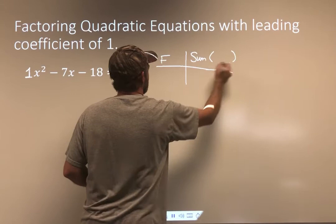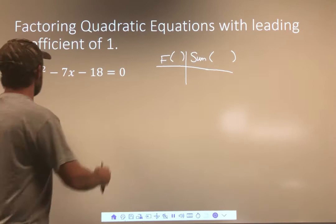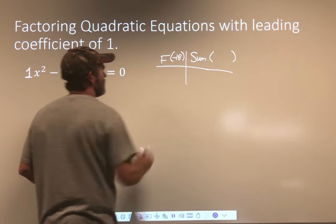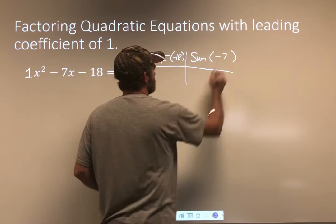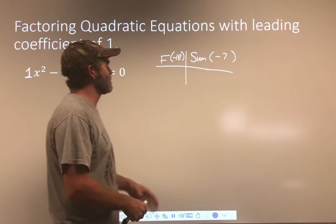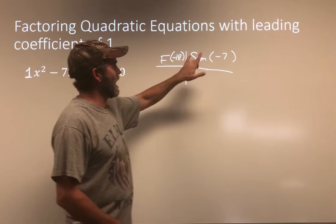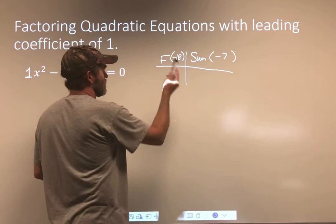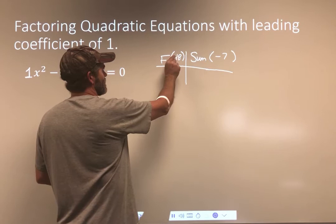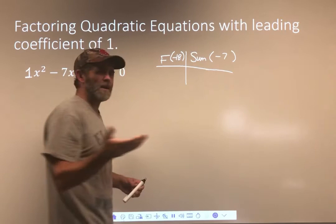The factor is going to be 1 times negative 18 — I take the first and the last number, multiply them, and I get negative 18. The sum is always this middle term: it's negative 7. Factor means multiply, sum means add. So I'm really thinking: what times what is negative 18, when added together gives negative 7? Since this factor is negative, one of these has to be positive and one has to be negative. But when I add them it stays negative, so the largest has to be negative.